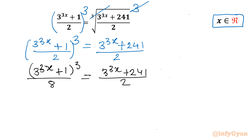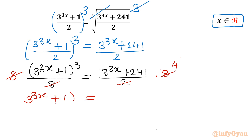Now I will multiply both sides by 8 to eliminate the denominator. The 8s cancel on the left, and 2 reduces to 4 on the right, giving us (3^(3x) + 1)^3 = 4·(3^(3x)) + 241.